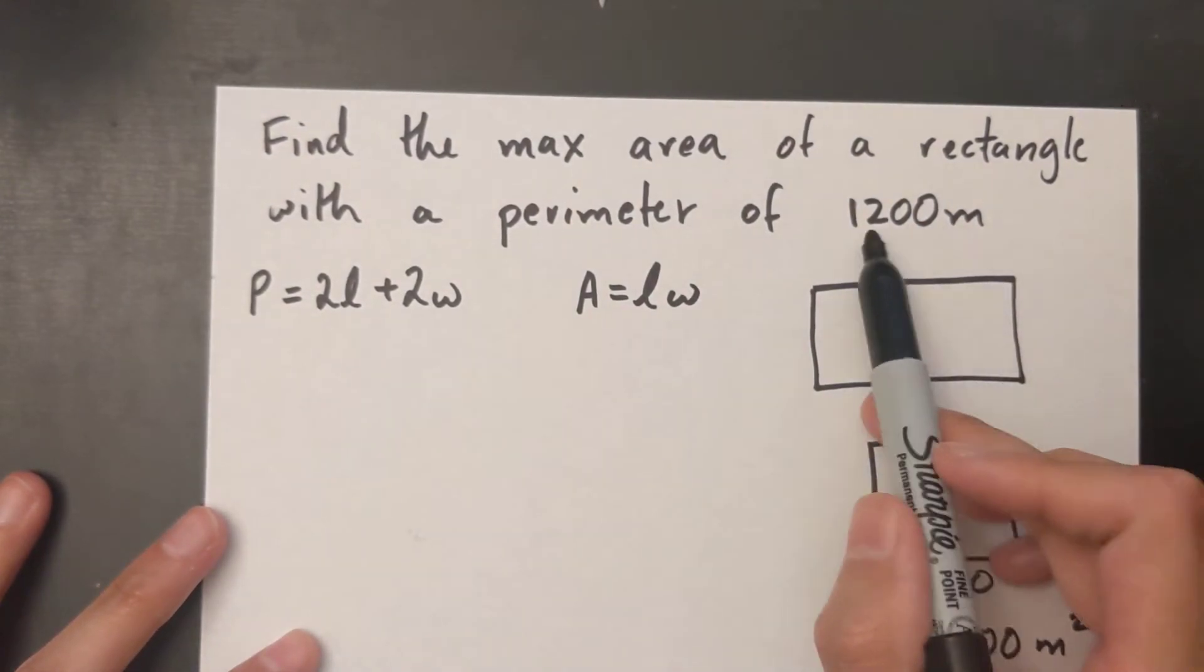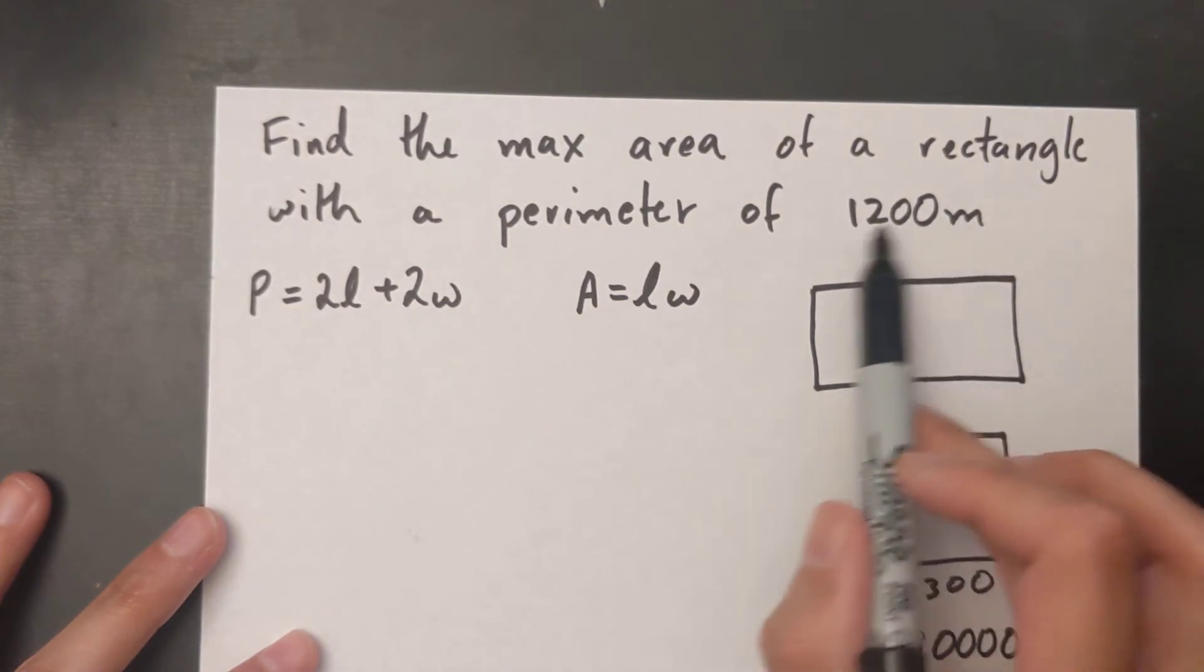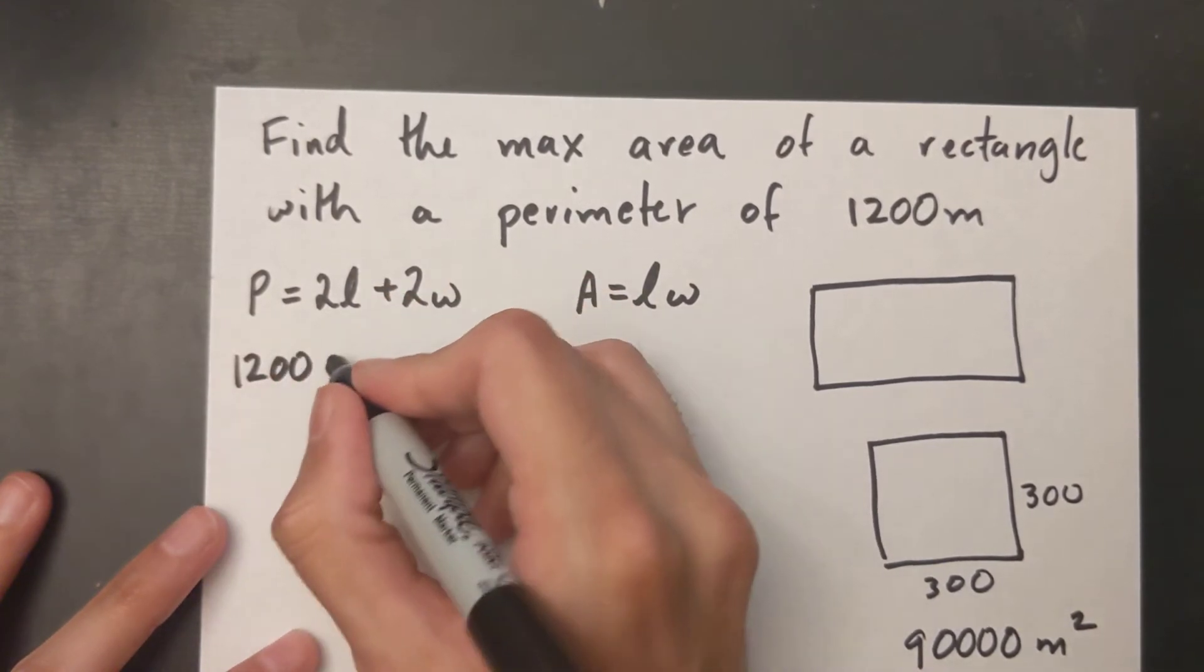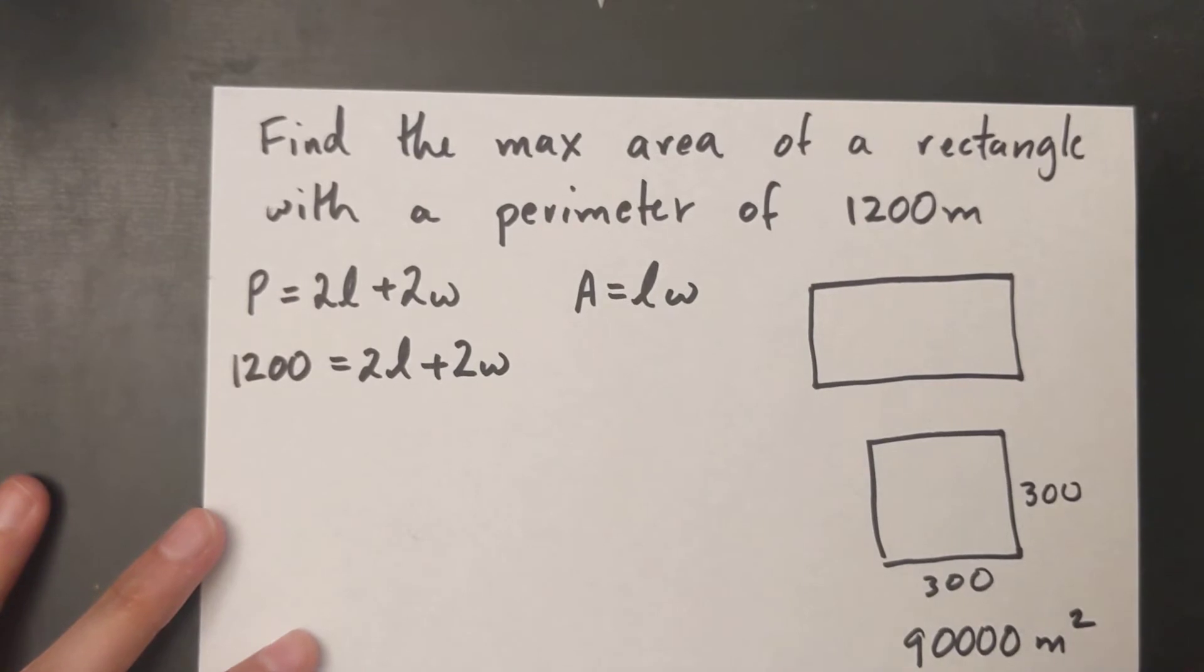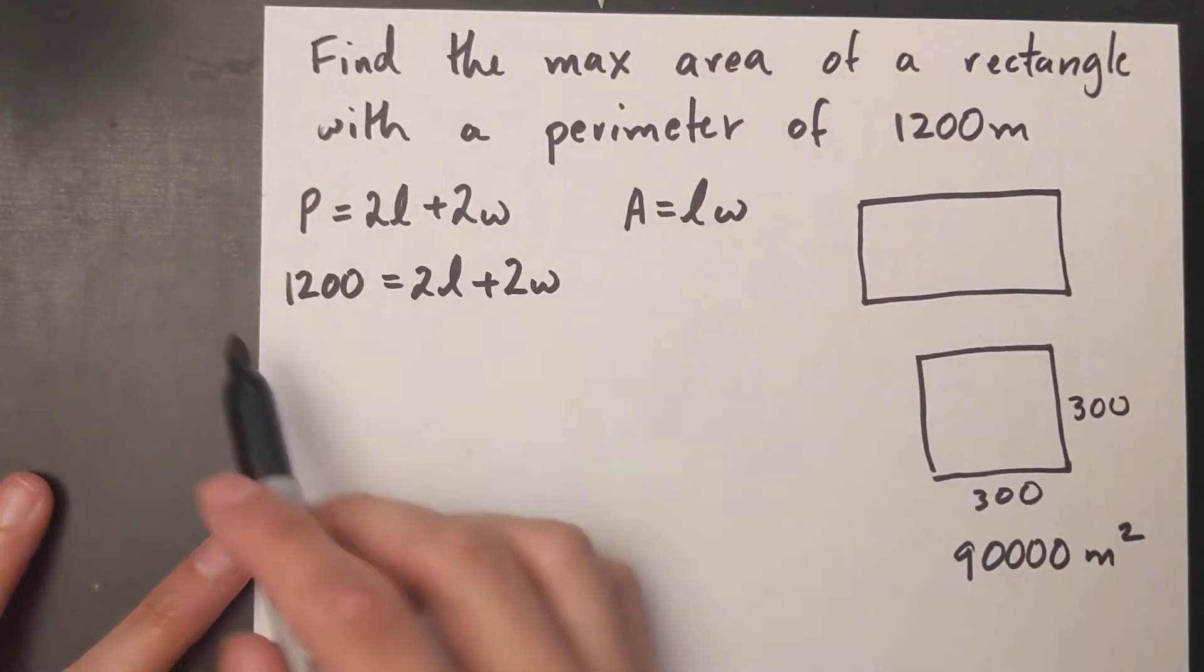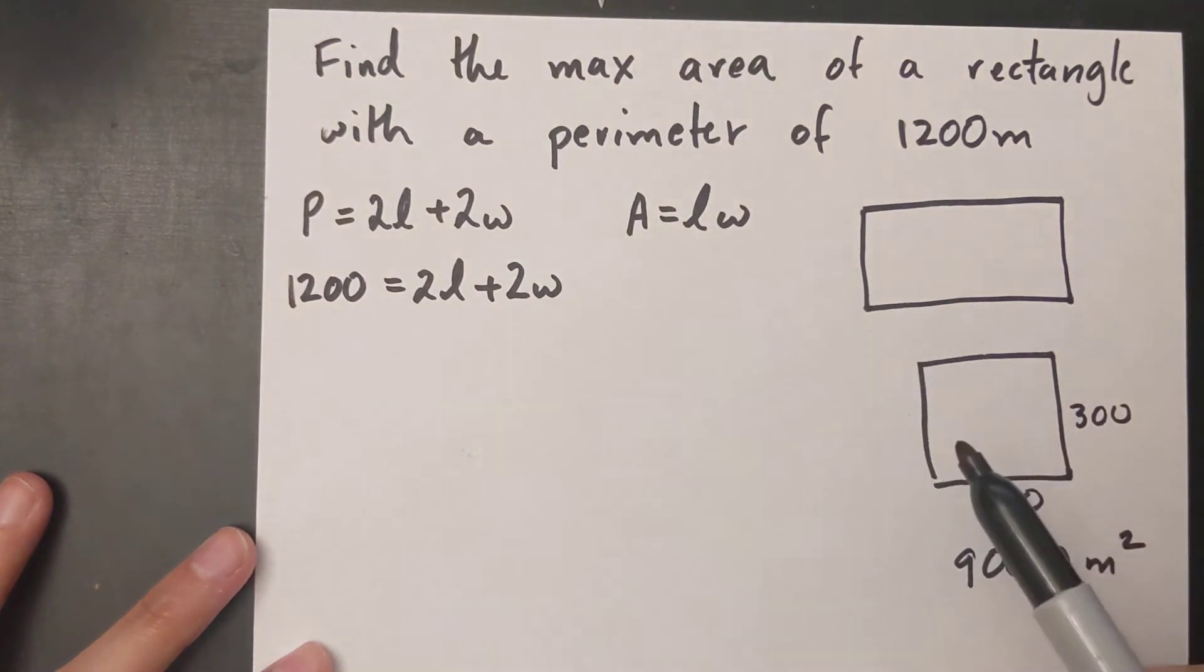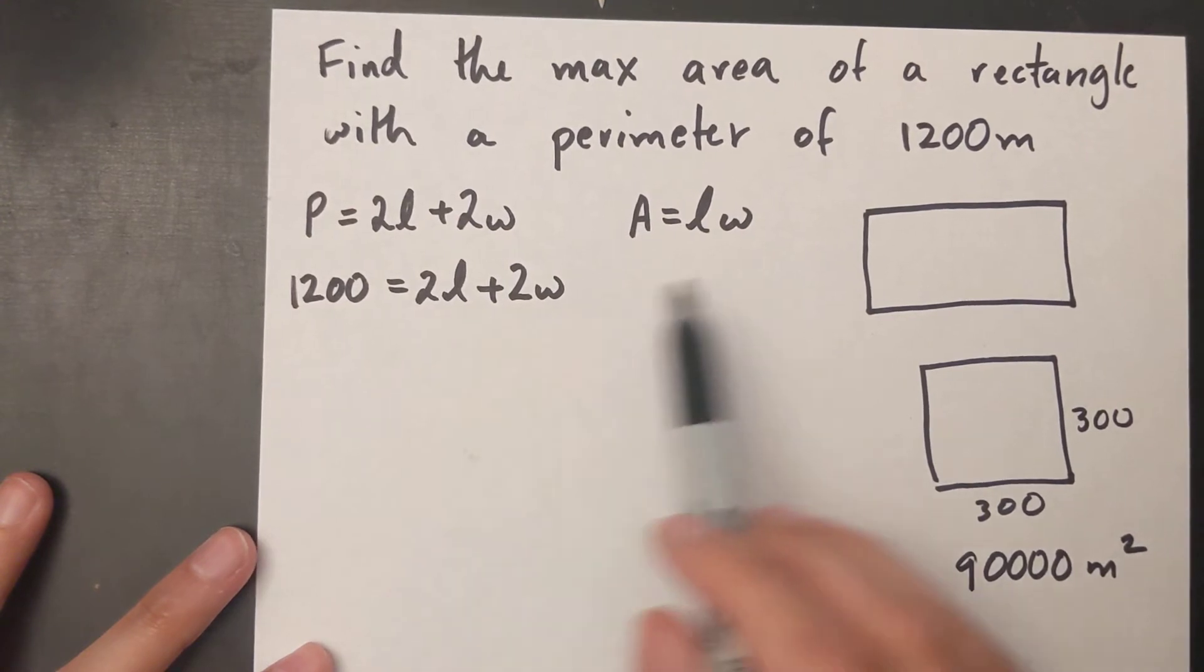And the only information I have in this question is 1200 meters. I'm going to replace my perimeter with 1200. Okay, so this is what I've got here and I have to use this to somehow find my max area. Well, the key to doing this is to first isolate a variable here and then sub it in this equation.